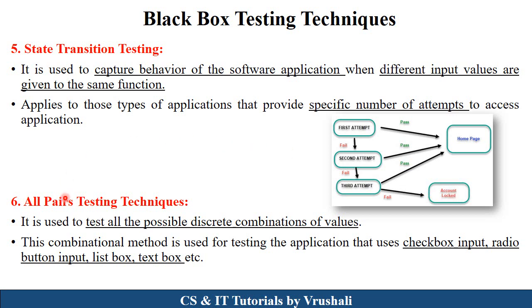The next technique is all pair testing. Here the tester tests all possible discrete combination values. Suppose in a registration form there are different components like checkboxes, radio buttons, list boxes, and text boxes for accepting input values. The tester checks that all these combinations work properly.